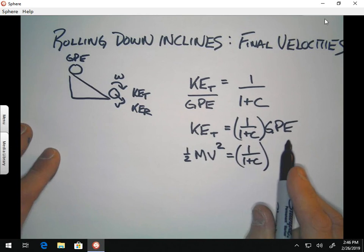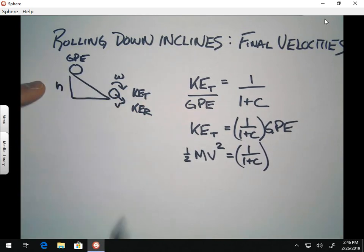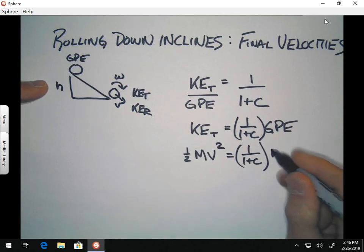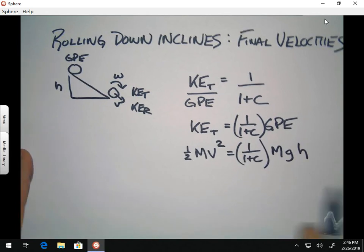That's going to be equal to 1 over 1 plus C times the gravitational potential energy. And now we have to look at the picture here. So, let's make H the height of the ramp.